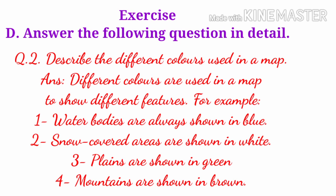Number two: snow covered areas are shown in white. Number three: plants are shown in green. Number four: mountains are shown in brown.